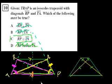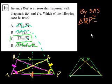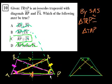So we could use the argument side-angle-side: the side, angle, and side are congruent to this side, angle, and side. By SAS, triangle TRP is congruent to triangle TAP. And if they're congruent, then all of the corresponding sides are equal, so TA is congruent to RP.